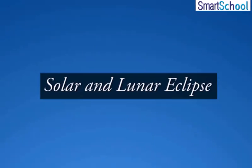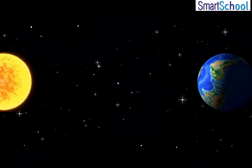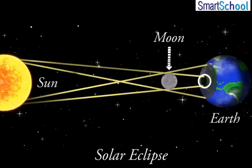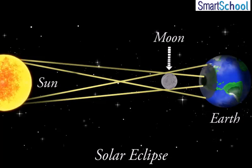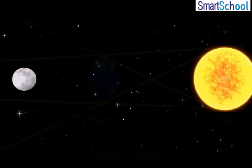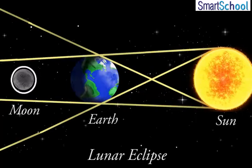Solar and Lunar Eclipse. We see a solar eclipse when the shadow of the moon falls on the earth. A lunar eclipse occurs when the shadow of the earth falls on the moon.